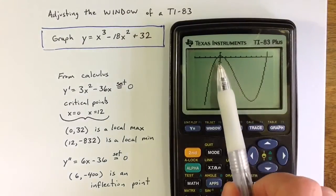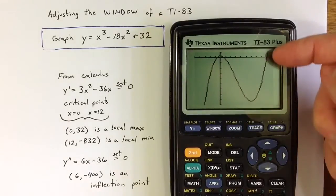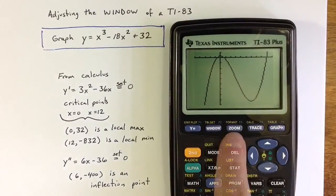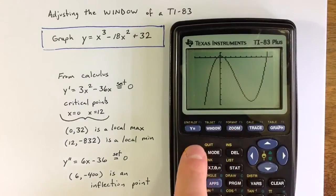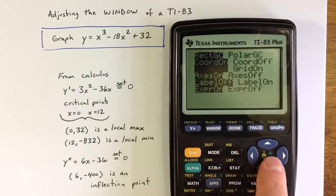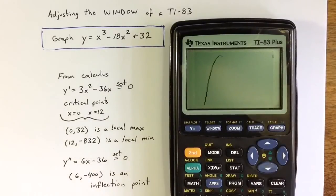Because that y-intercept is pretty close to the x-axis, with this scale at least, another option to see that graph even more, if I go to format, I can turn off the axes and then just see the graph of the function.